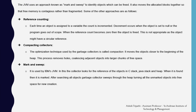The Java Virtual Machine uses an approach known as Mark and Sweep to identify objects which can be freed. It also moves allocated blocks together so that free memory is contiguous rather than fragmented. Another approach is reference counting: each time an object is assigned to a variable, the count is incremented. A decrement occurs when the object is set to null or the program goes out of scope. When the reference count becomes zero, the object is freed. However, this approach is not ideal as objects might have a circular reference.